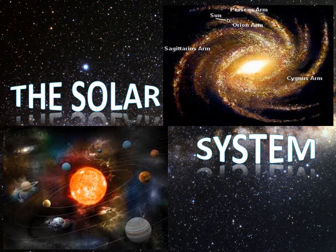These bodies include 8 planets and their more than 160 known moons, dwarf planets, Kuiper belt objects, asteroids, comets, and meteoroids.